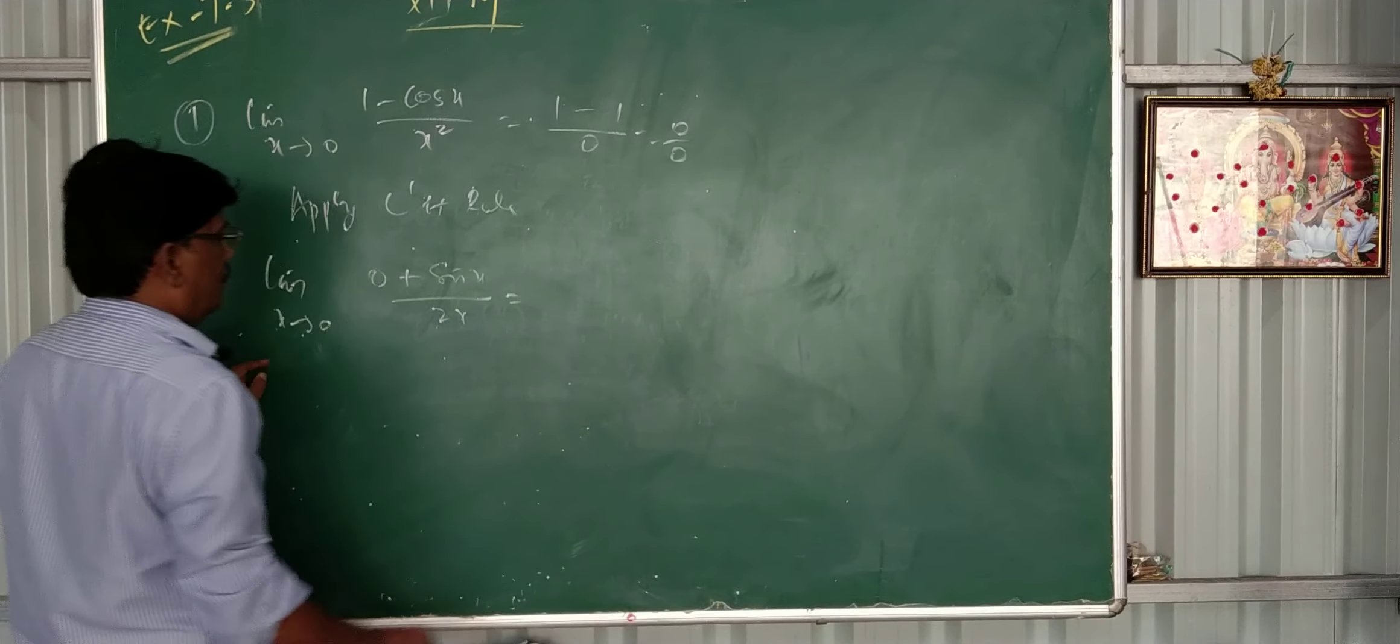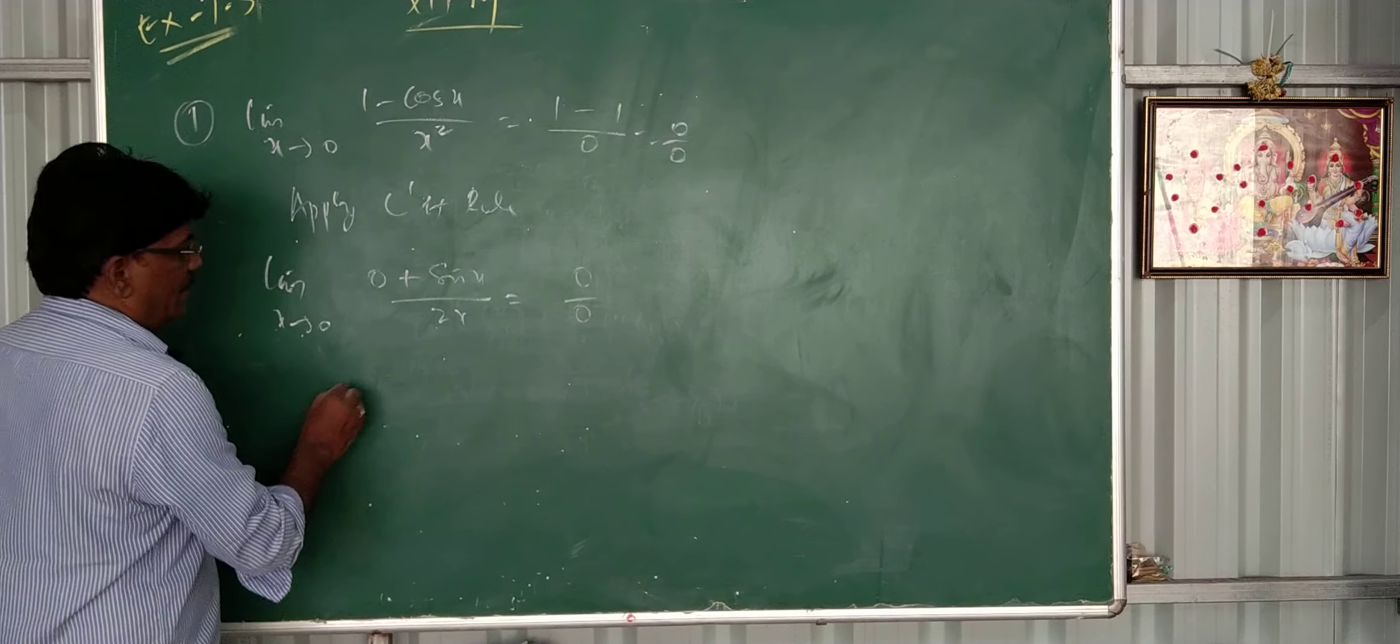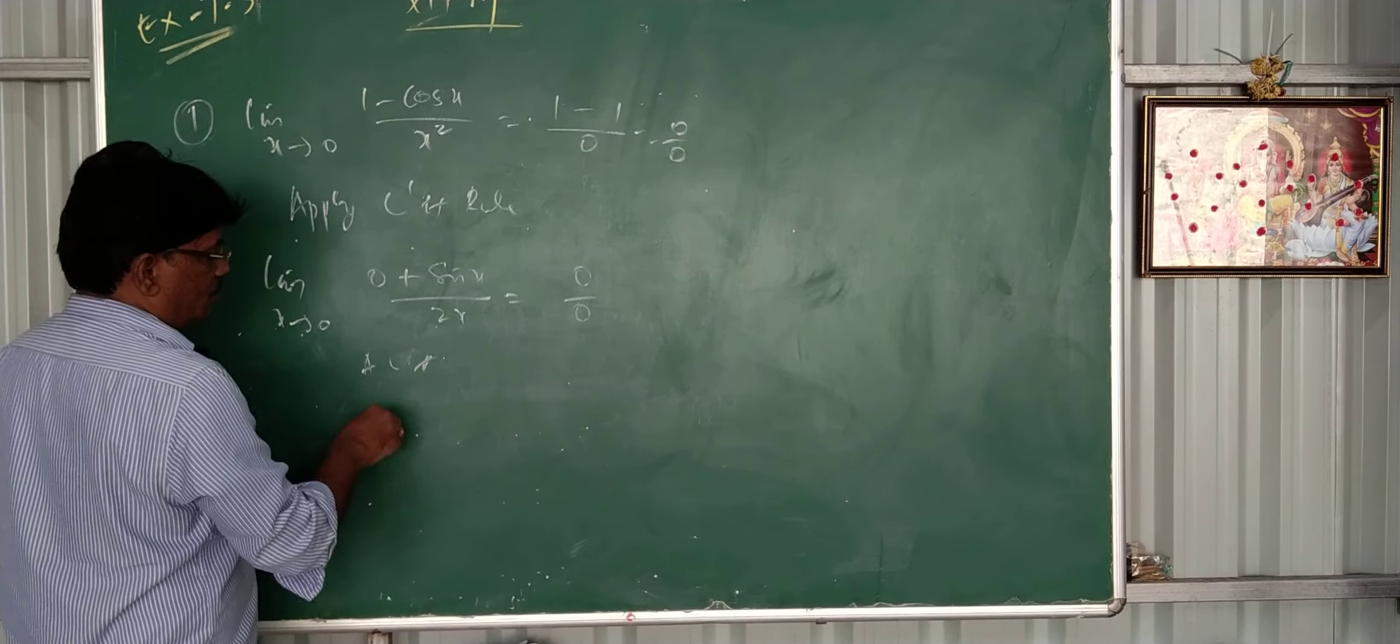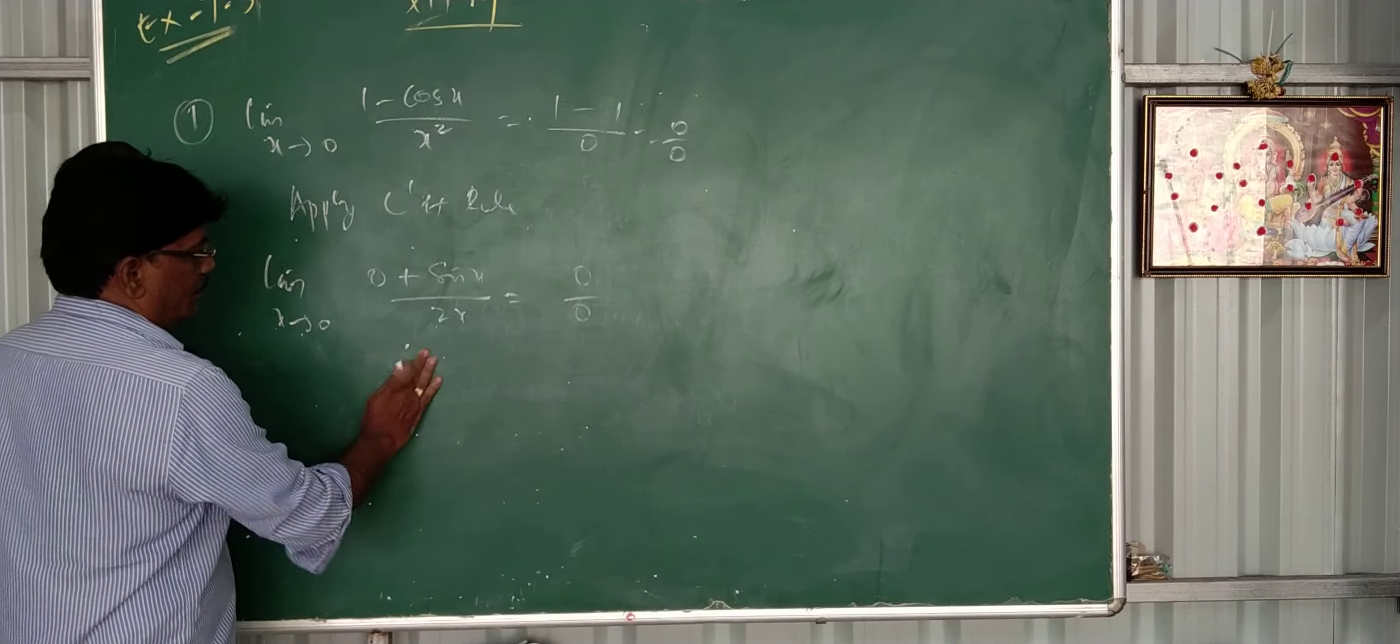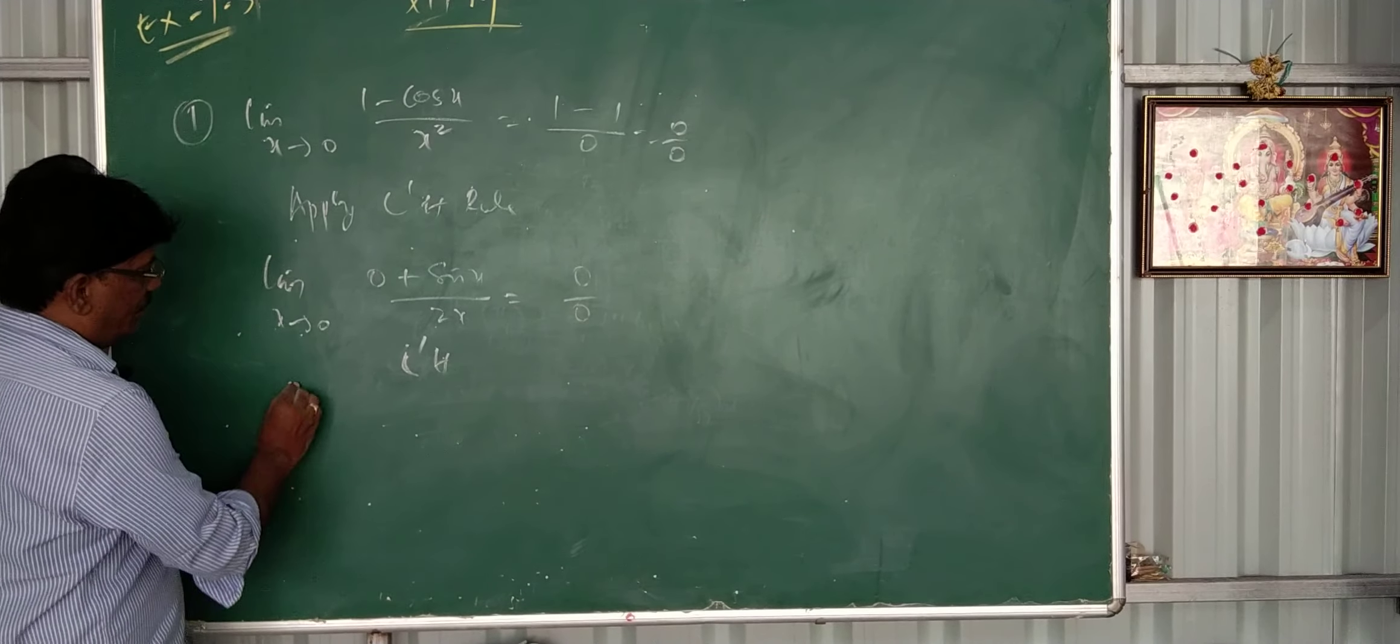So I will apply 0: sin 0 is 0, 2 times 0 is 0. So again 0 by 0. Apply L'Hôpital rule again.